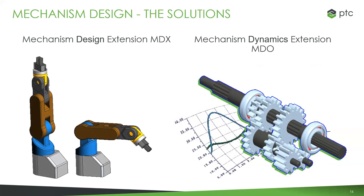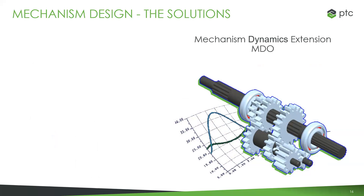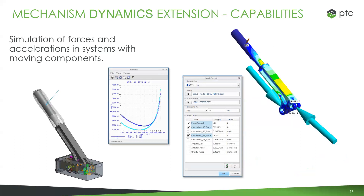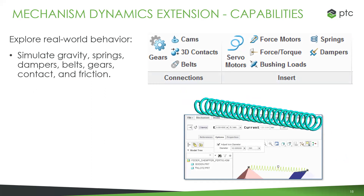But then there's another side to this — what happens when you need to start taking into account forces? This is really where mechanism dynamics comes into play. This is anywhere where we might have things breaking, any issues that take more variables into account. We're going to use all those motions we started with, but now let's go ahead and simulate the forces actually created by those different components, and study them to make sure they're going to work correctly.